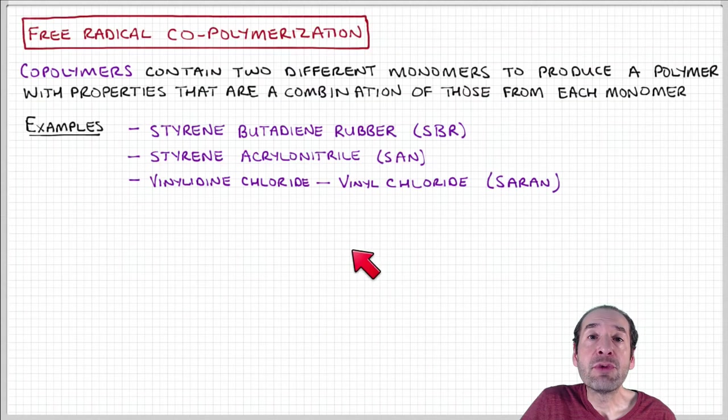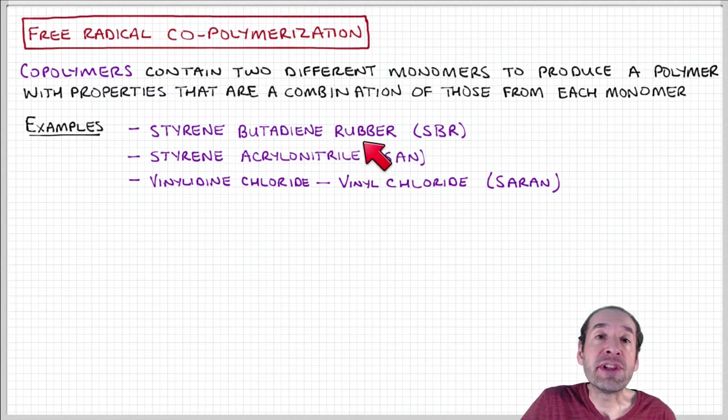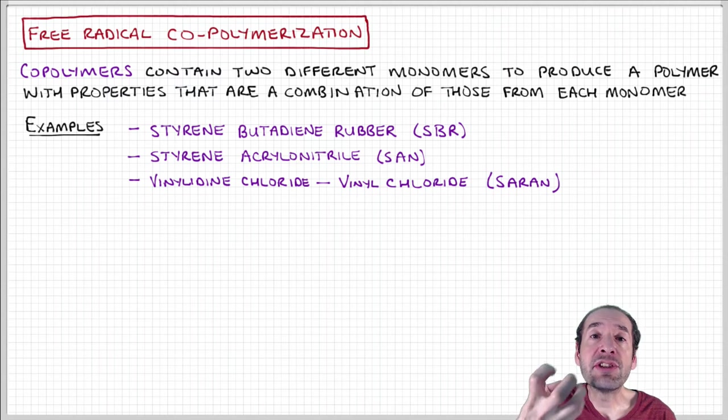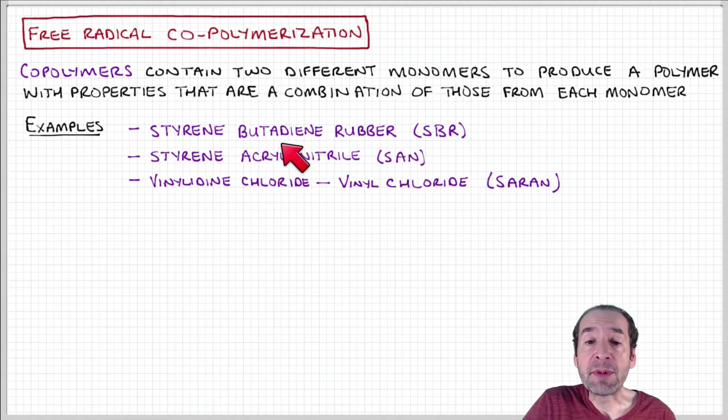Styrene butadiene rubber is one example of a material that is produced with copolymerization. Here you have a soft, deformable component, and you'd like to increase its mechanical strength and maybe make it stiffer. This is done through copolymerization.